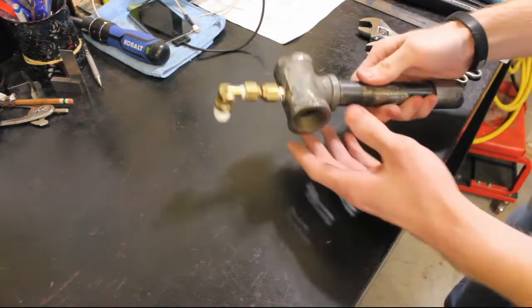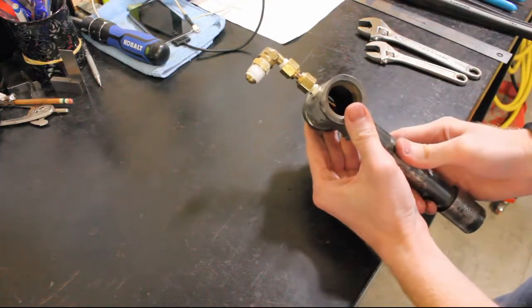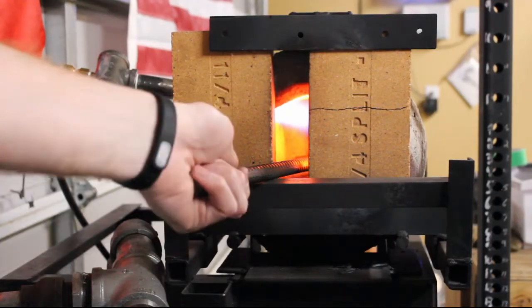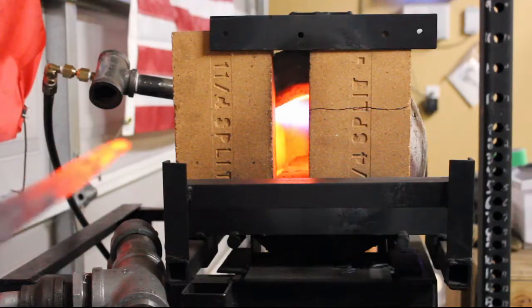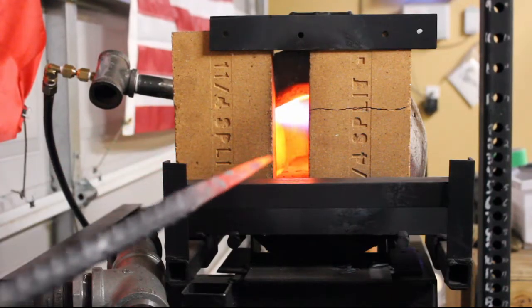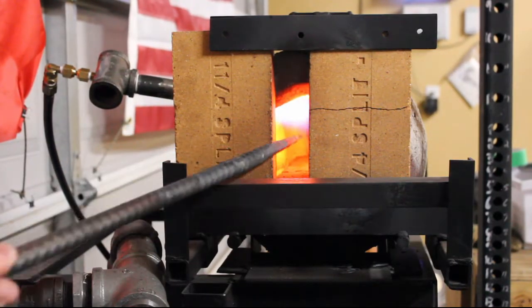Welcome back to the Keaton Knife Shop. Today we're going to be making a small Venturi style burner. A burner of this size will be adequate for small forges, or in my case using it as a heat treating burner in a larger forge.